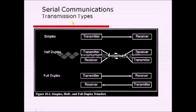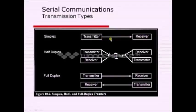Now let us see the transmission types in serial communication: simplex, half duplex, and full duplex. In case of simplex, the transmitter and receiver are connected with a single channel, and this channel is always unidirectional. Therefore, the transmitter will always transmit the data and the receiver will always receive the data. That is why it is called unidirectional communication.